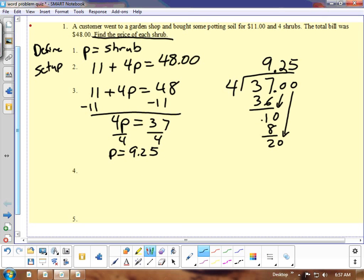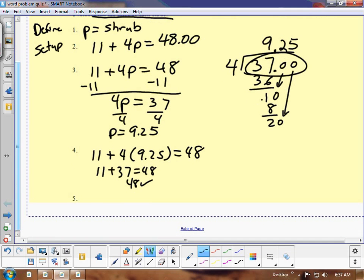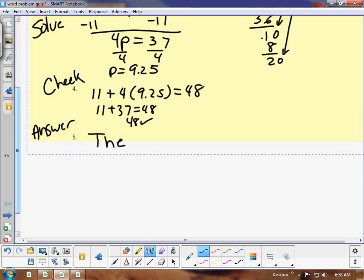Okay now we need to check it. Is 11 plus 4 times $9.25 equal to $48? Well 4 times 9.25 over here we know is 37. So it was 11 plus 37 equal to 48 and that checks out. So the last step of the Finney 5, we've solved it and now we need to answer the question. The price of each shrub is $9.25.